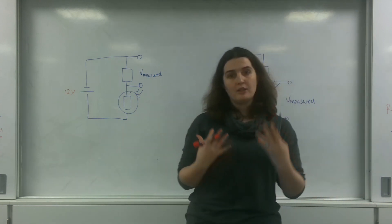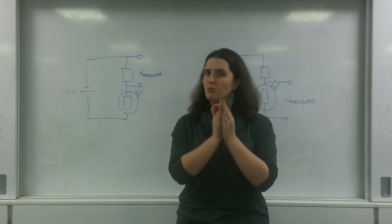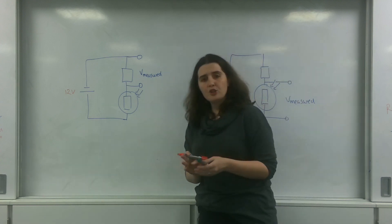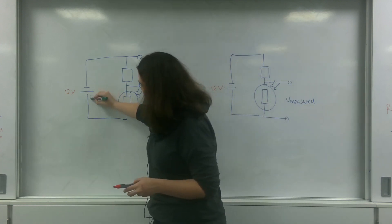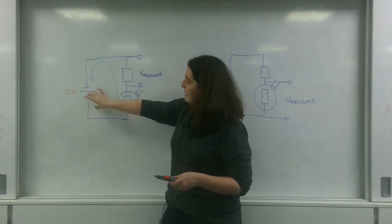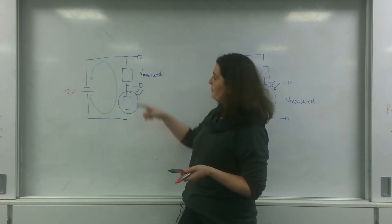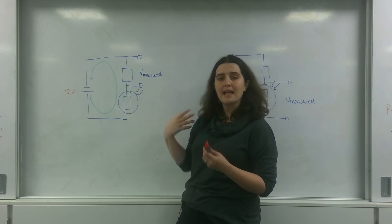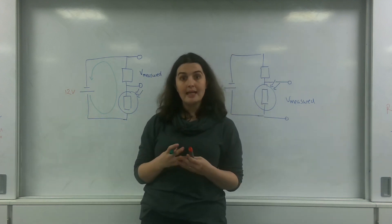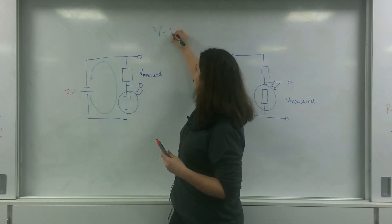I'm going to bring this back to Kirchhoff's laws. Kirchhoff's law is not on the specification, but it will really help you, especially with potential dividers. Kirchhoff's second law states that in one loop, the potential that came in must equal the potential that comes out. So together the potential across these two resistors must add up to 12 volts, and I know how to calculate potential using Ohm's law: V equals IR.